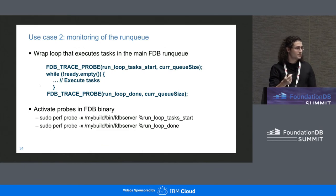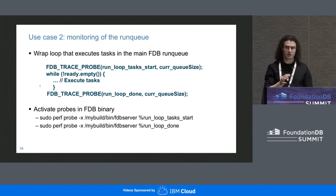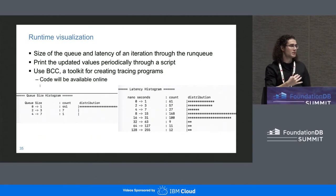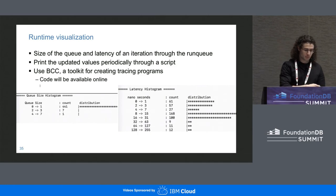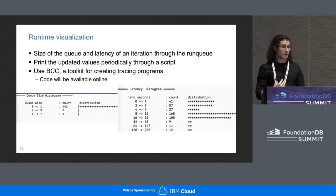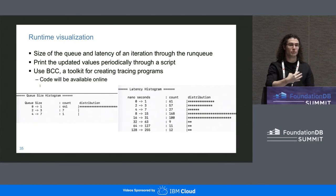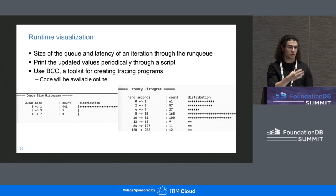A nice visualization has been contributed by the Snowflake team via a script using BCC, a framework for building profiling programs. The script consumes traces generated by these probes and at runtime generates histograms showing the distribution of run queue size on the left and the time to process the run queue once on the right. This refreshes every second, giving a neat live visualization of what's happening in your FoundationDB deployment.